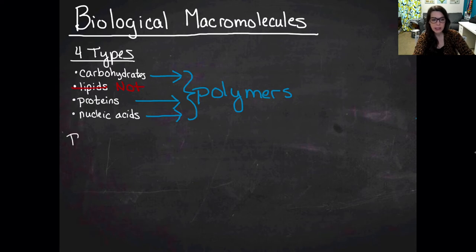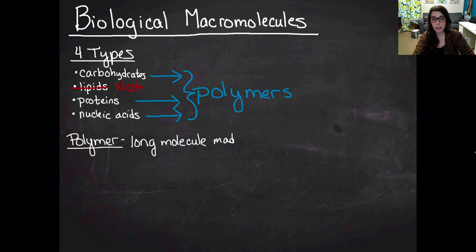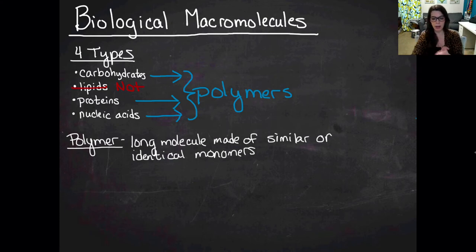So let's talk about what a polymer is. A polymer is just a long molecule that's made up of similar or identical monomers. So that is a word that we don't know yet, probably monomers. We're going to define it, but not yet.